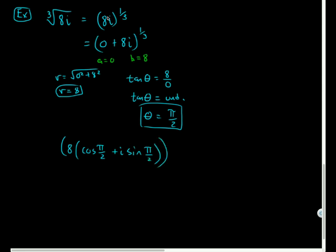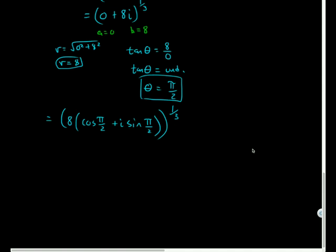And I'm raising this all to the 1/3 power. And so what I'm going to do is use De Moivre's theorem. And I will distribute this 1/3, so to speak, to all of these. So 8^(1/3) times cosine 1/3 times π/2 plus i times sine of 1/3 times π/2.